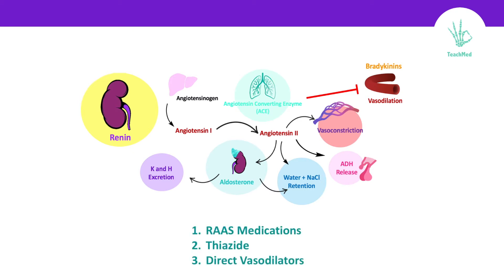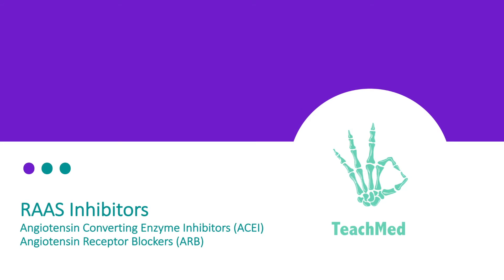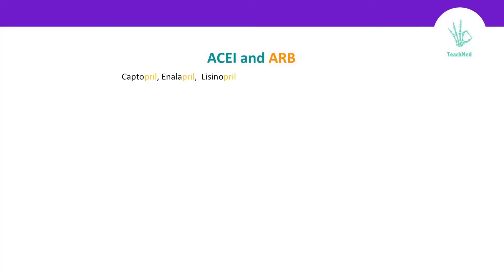In this video we will talk about the RAS medications, thiazide as one of the diuretics, and direct vasodilators. For RAS inhibitors, we will talk about the angiotensin converting enzyme inhibitors or ACE inhibitors, and angiotensin receptor blockers, ARBs. Examples of ACE inhibitors are captopril, enalapril, and lisinopril — they end with 'pril'. And for ARBs: valsartan, candesartan, and losartan — they end with 'sartan'.